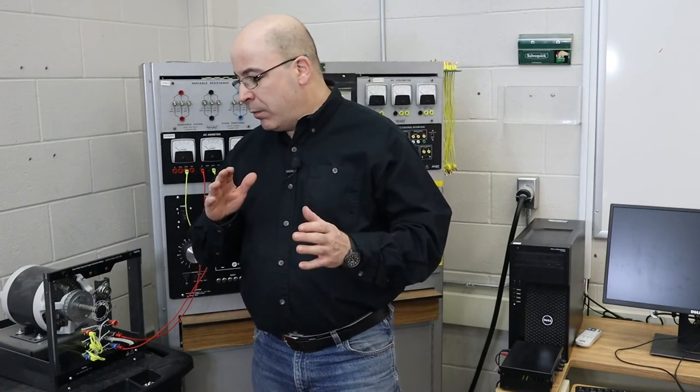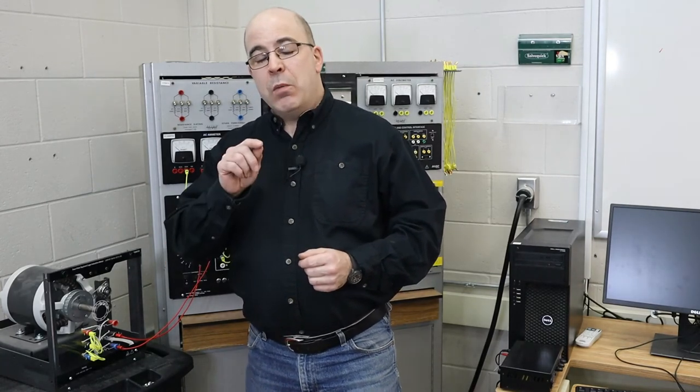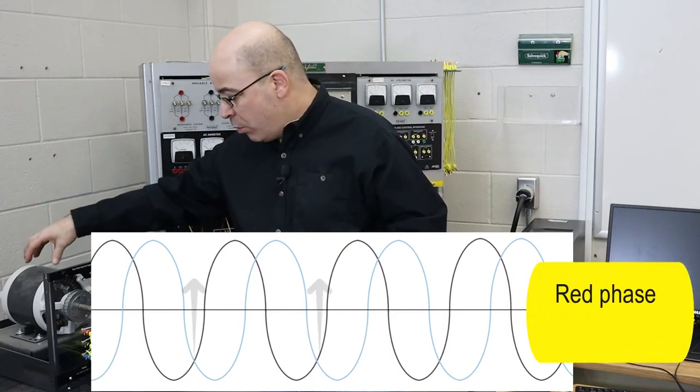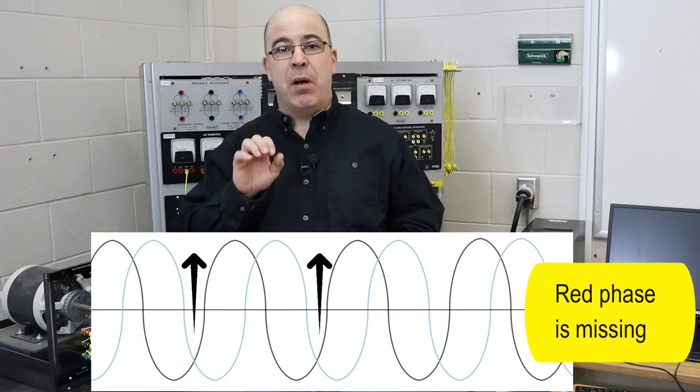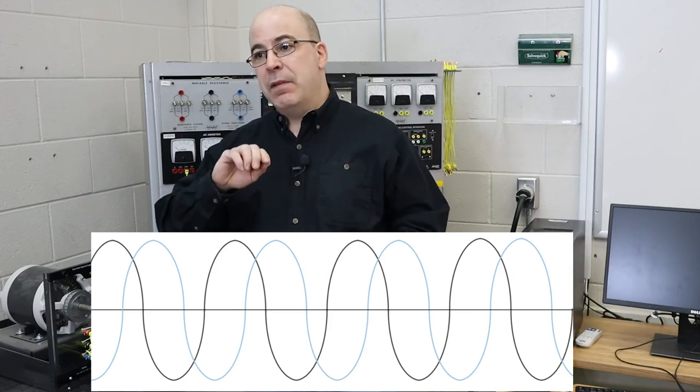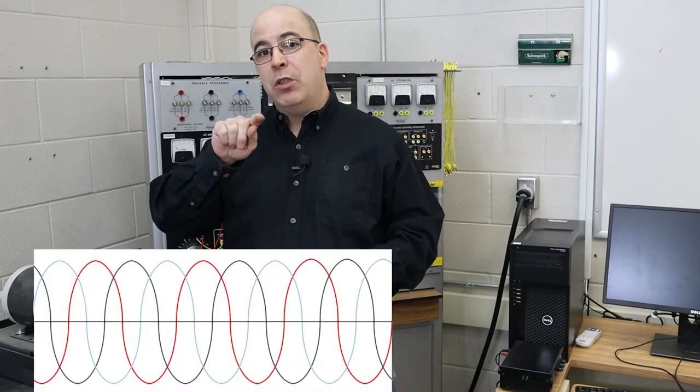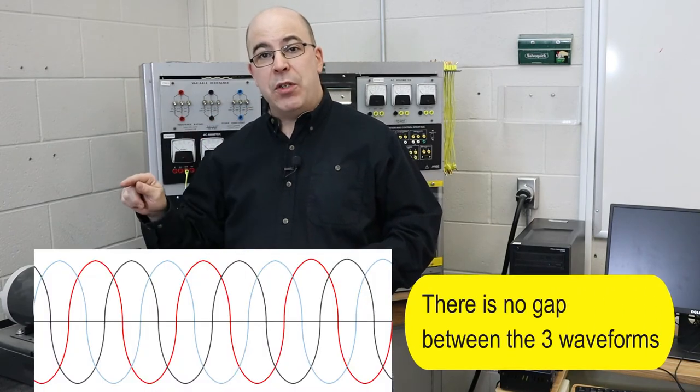Well it comes down to how the voltage waveforms interact. We've lost one phase. Now for the three phases what happens is that there's a gap in the sine waves and the rotor basically sees this as a pulse. Because of the fact we do not have a complete three waveforms that helps establish a direction of rotation.